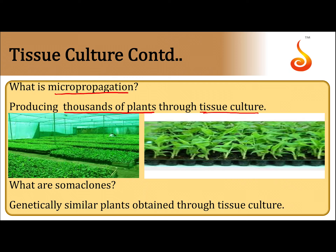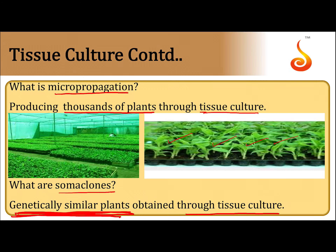What are somaclones? Genetically similar plants obtained through plant tissue culture are called somaclones. The plantlets are identical — we cannot differentiate them, as genetically all the plants are similar.